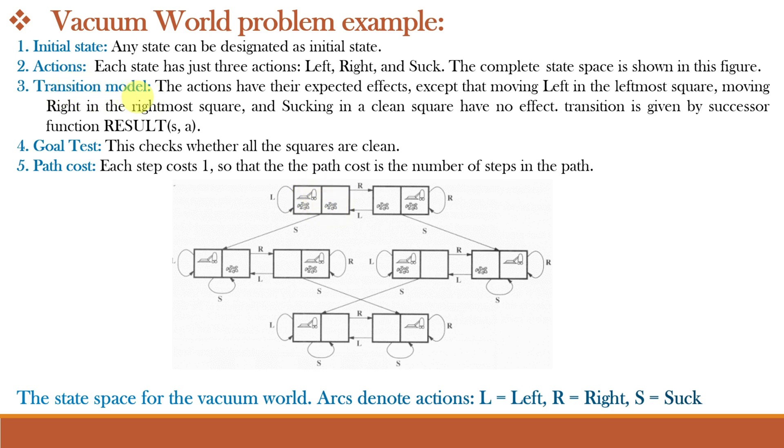Next step is transition model. The actions have their expected effects except that moving left in the leftmost square will do nothing, moving right in the rightmost square will do nothing, and sucking in a clean square will have no effect. We can see here moving left in the leftmost square has no effect. Similarly, moving right in the rightmost square has no effect, and sucking in a clean square has no effect, shown with a circular arc.